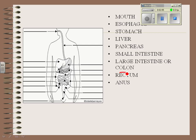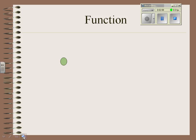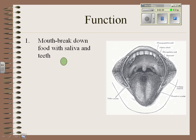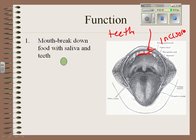Along the way, we're going to talk about what happens to it — its function. The function of your mouth is to break down food with saliva and your teeth. You have different kinds of teeth. Your front teeth are your incisors — to incise means to cut or chop.